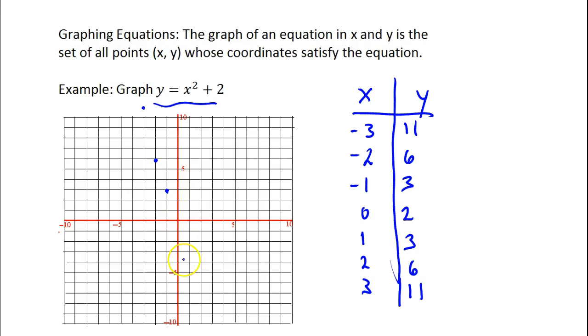Negative 1, 3. 0, 2. And then there's 1 right there at 1, 3. I messed up, 0, 2, not 1, 2. 0, 2. 1, 3. 2, 6. And 3, 11. Now, these are not the only points in the graph. It also includes all the points in between. So we connect the dots. And that's the graph of our function.